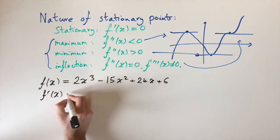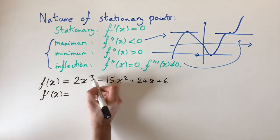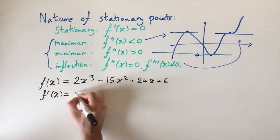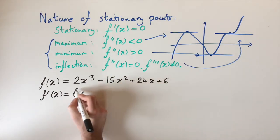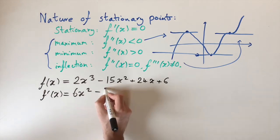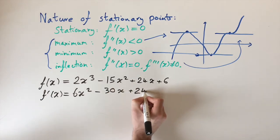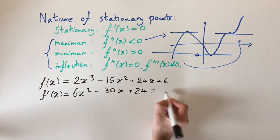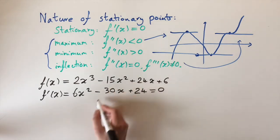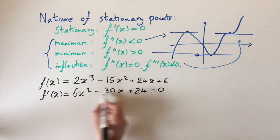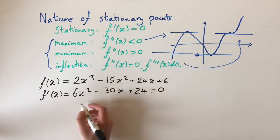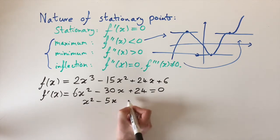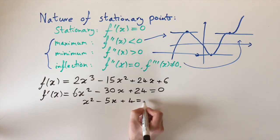So f′(x) — if we differentiate, bring the power to the front and reduce the power by one, that's just standard differentiation — this gives us 6x² − 30x + 24. If we want to find the stationary points, we set this equal to zero and solve this quadratic equation. Notice that all these terms are a multiple of 6, so we can divide through by 6, giving us x² − 5x + 4 = 0.